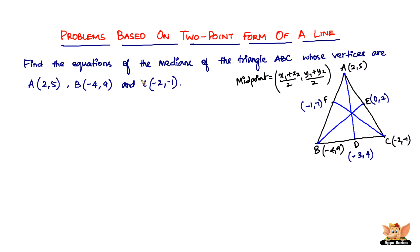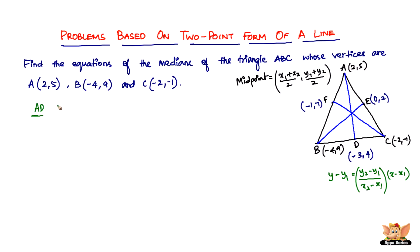Let us start off by finding the equation of AD. We just have to substitute the values of the two points that involve A and D into the formula: y − y1 = ((y2 − y1)/(x2 − x1)) × (x − x1). For AD, let A be (x1, y1) and D be (x2, y2).